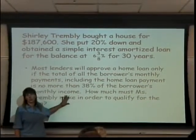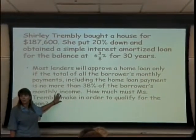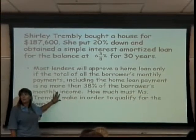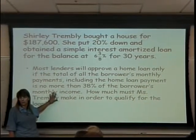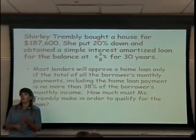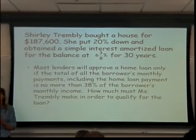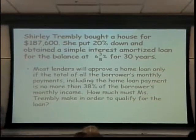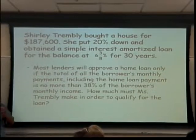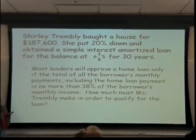In order to answer this question, we have to make a lot of assumptions. We have to assume that Shirley has no other monthly commitments. So, she doesn't have cable, she doesn't have cars, she doesn't have insurance. She doesn't have cable, she doesn't have a phone, she doesn't have anything that could be considered a monthly commitment.